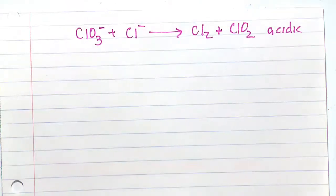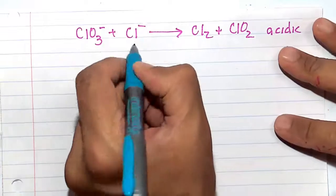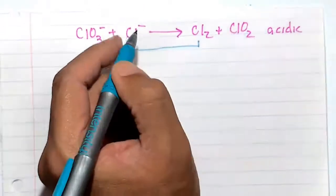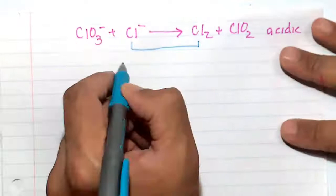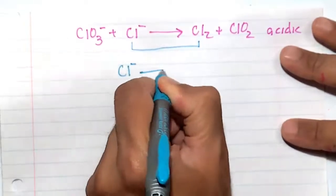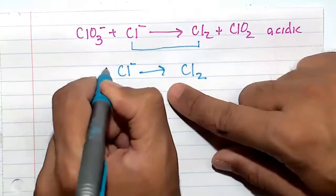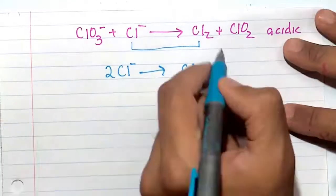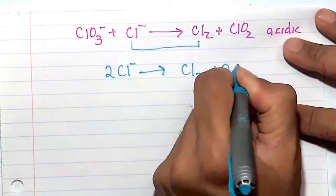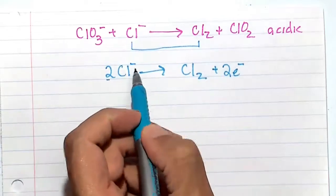The first thing that we see here is we have Cl- going to Cl2. So let's go ahead and balance this half reaction, Cl- going to Cl2. We can balance out the chlorines, and we'll balance out the charge here. So minus two here.